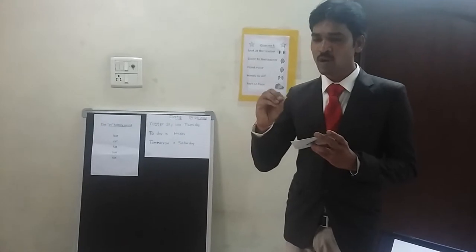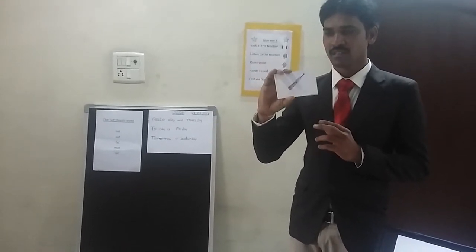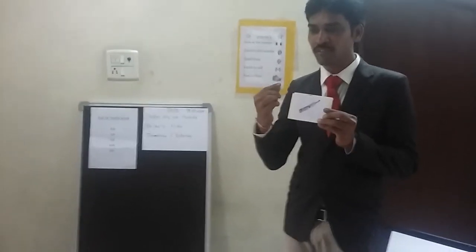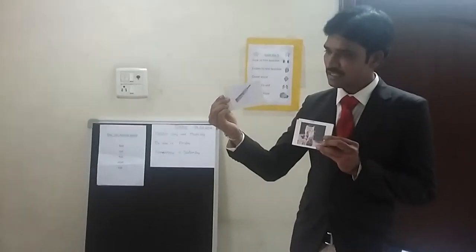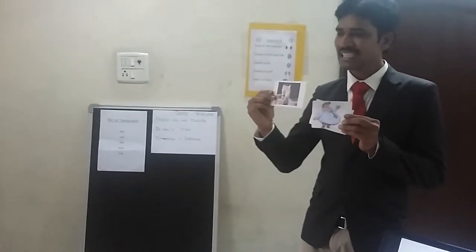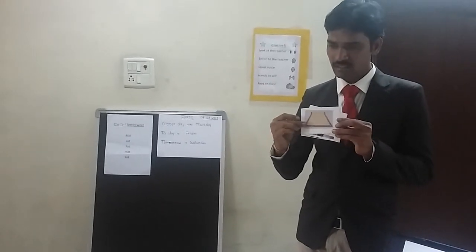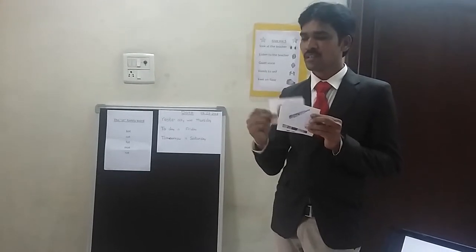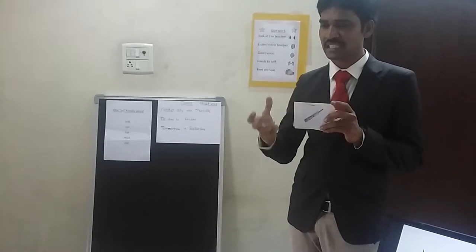Now what did you observe in these pictures? You want me to show once again? Now listen to your teacher carefully — how your teacher is saying. What is this? It's a bat. It's a cat. Fat. Mat. And a rat. Now what do you observe in these pictures and words which I uttered?